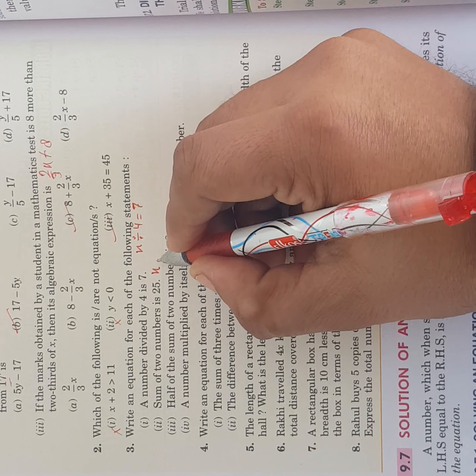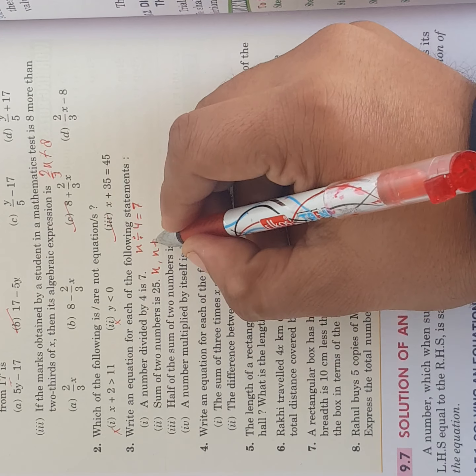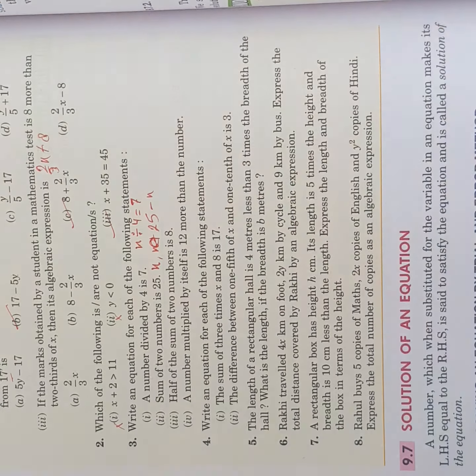Sum of 2 numbers is 25. If first number is x, then your second number will be, your second number will be 25 minus x, right?